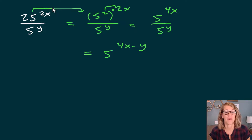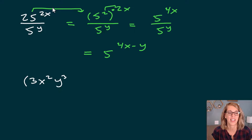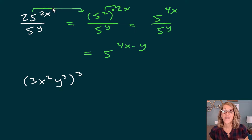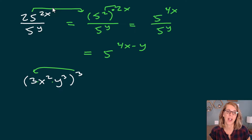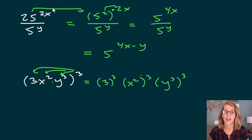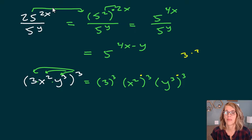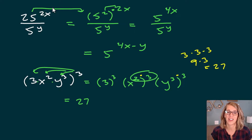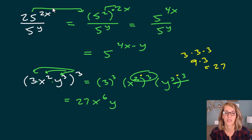Let's put some of our properties together. We've got 3x squared y cubed, all to the third power. Everything inside the parentheses is multiplied, so I can bring that power inside — 3 gets raised to the third power, x squared gets raised to the third power, and y cubed gets raised to the third power. Now I have power of a power, so I multiply those powers together. First, 3 times 3 times 3 is 27. Then x to the 2 times 3 is x to the sixth. And y to the 3 times 3 is y to the ninth.